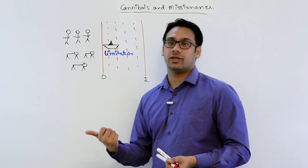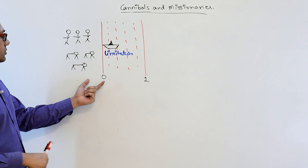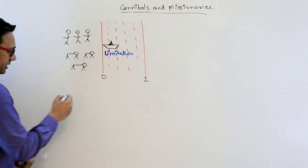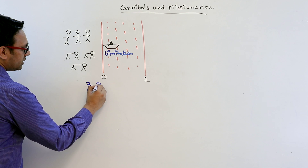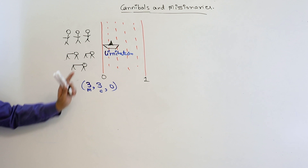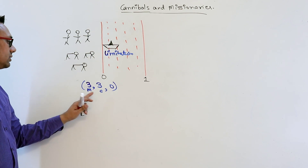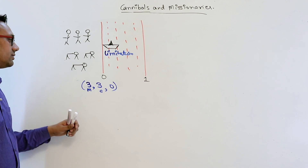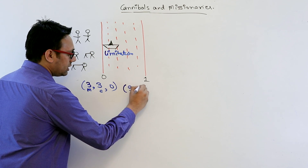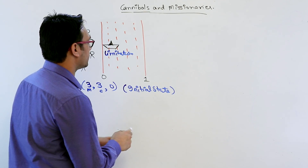This is a real-world example, and with the help of these real-world examples we are going to define the state space. The initial state is: three missionaries, three cannibals, and the boat at bank zero. The number of missionaries and cannibals are exactly the same, so they are in a safe state.